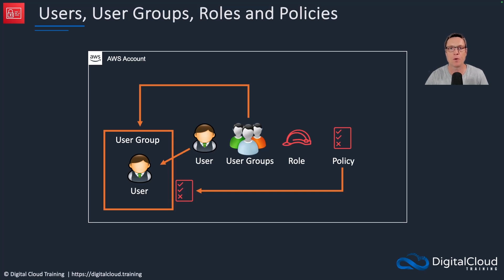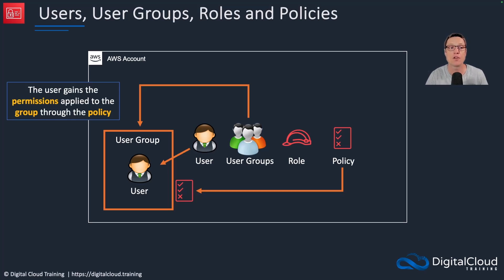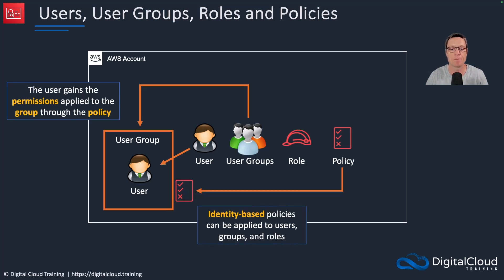If we have several people who have a common job role, we can attach a policy that provides the permissions they need to do their job, put all those users in the group, and now we only have one permissions policy to manage. The user will gain the permissions applied to the group through the policy. These are called identity-based policies — they get applied to users, groups, and roles.